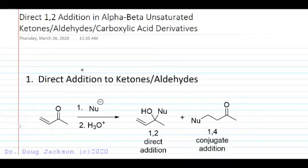All right, let's look at direct 1,2 addition and alpha-beta unsaturated ketones, aldehydes, and a little bit about carboxylic acid derivatives. Our most predictable additions will be direct addition to ketones and aldehydes.